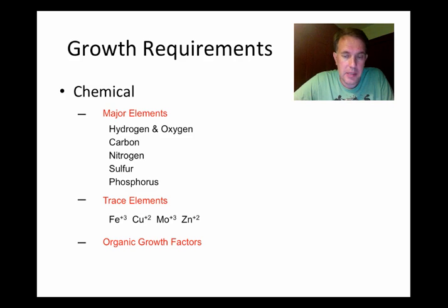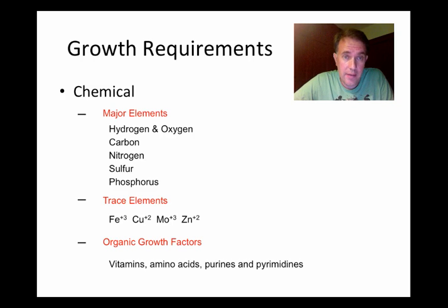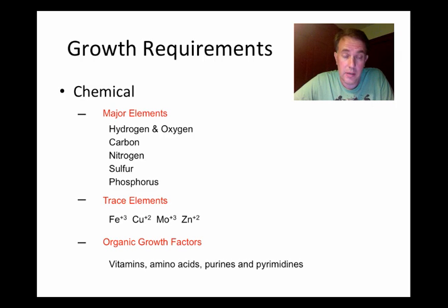Essential organic compounds that can't be synthesized are known as organic growth factors. For some bacteria, these include vitamins, some amino acids that they can't make on their own, and purines and pyrimidines, which are used to make the nucleotides for DNA and RNA. We're accustomed to thinking of molecular oxygen as a necessity for life, but in reality it can be very poisonous, and very little of it actually existed in the atmosphere during most of the Earth's history when bacteria were evolving.